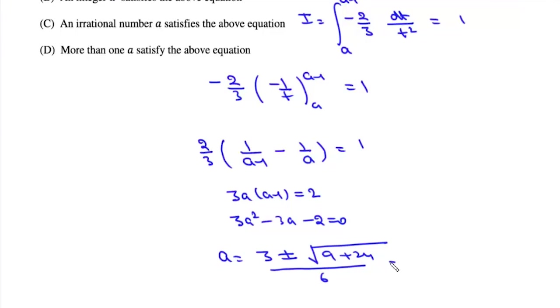Which is three plus minus under root thirty three by six.